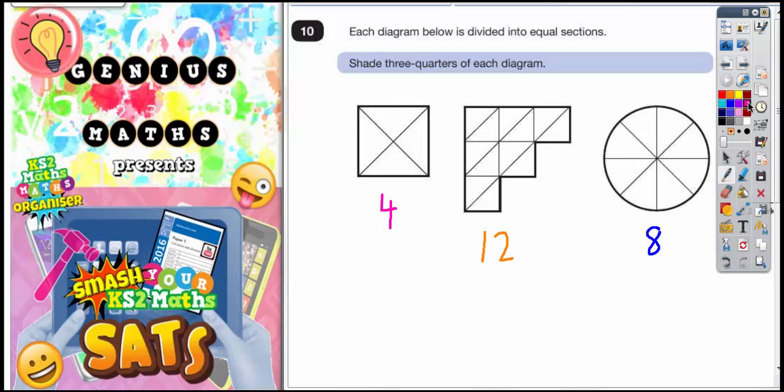Right then. Now we can go back and start working out what 3 quarters. Well in the first diagram I want 3 quarters of 4. On my second diagram I'm going to want 3 quarters of 12. And in my third diagram I'm going to want 3 quarters of 8.